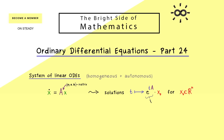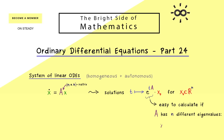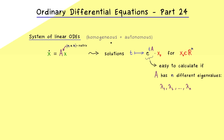We also know from the last video that the matrix exponential is easy to calculate if we have enough eigenvectors of A. The best case scenario is when A is a diagonalizable matrix — this is the case when A has n different eigenvalues. This is a very important result from linear algebra: if you calculate the eigenvalues and find n different ones, then the matrix is diagonalizable. Let's call the eigenvalues λ₁, λ₂, and so on. In this case we can easily calculate the matrix exponential and form the whole solution space of the system.